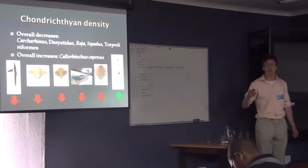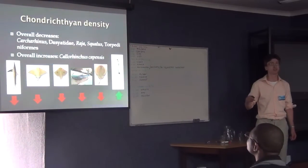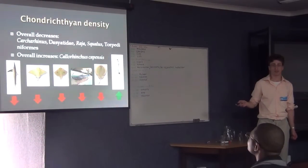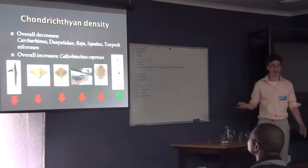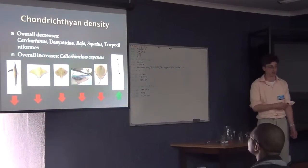Just to summarize: there were overall significant decreases in the genus Carcharias, the dasyatids, the skates, the spiny dogfish, and the torpedoes, which includes both the electric rays and the numbfish. And Callorhinchus capensis is the only one to increase significantly.